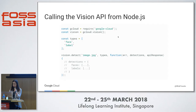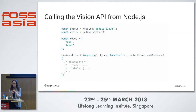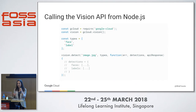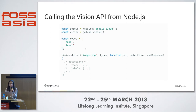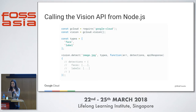The Vision API is a REST API, so you can call it from any language. Here's a Node.js example using the Google Cloud Node module. I create a Vision object, call .detect, pass the types of detection I want to run — in this case face and label — and then I get a bunch of detection data back.